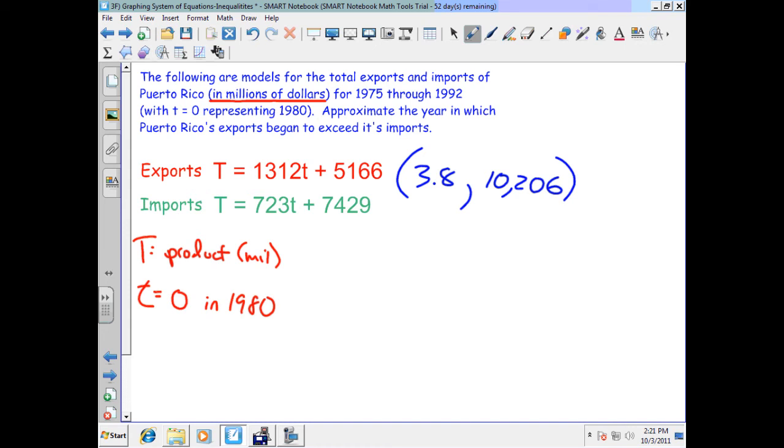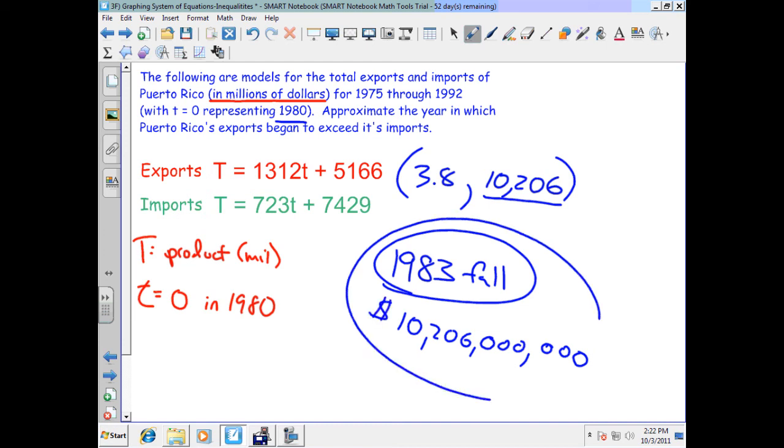So here is my value. Now that's the point on the graph. We need to translate that to data. Approximately what year did the exports exceed imports? Well, 3.8 years from 1980 would be 1983 and sometime in the fall, 0.8 years later. And this number is in millions. So really we're talking about 10 billion as far as our product for imports and exports. That's where it balances out. So the question really is what year did it happen? We answered that question. The amount of exports and imports at that time would be 10,206, but we have to convert that to millions. And now we have 10 billion in dollars. We have to take our answer and convert it into an answer that answers the question.